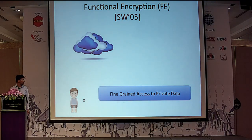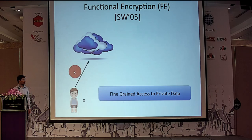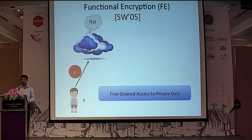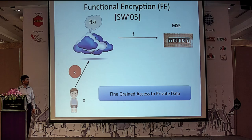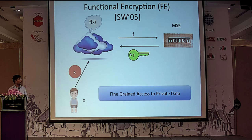What is functional encryption? We have the same user X who wants to talk to a cloud service provider, but now we want to give more fine-grained access to the private data. Bob encrypts his data and sends it to the cloud, but now the cloud wishes to compute some function f on the plaintext underlying the encrypted data. It talks to a trusted party with the master secret key, which returns a secret key for function f. Using this secret key and the ciphertext, the cloud can compute f(x).